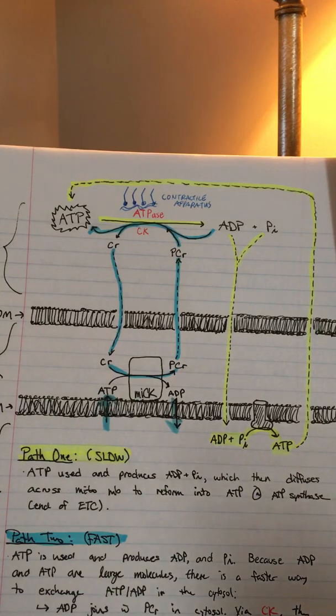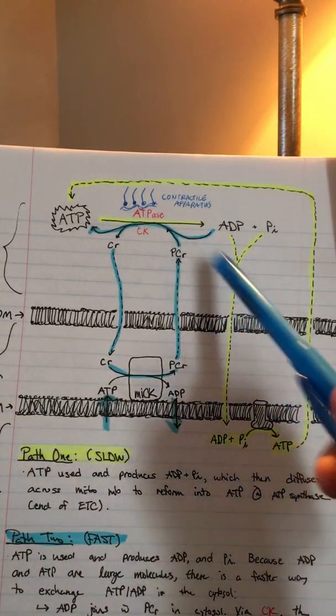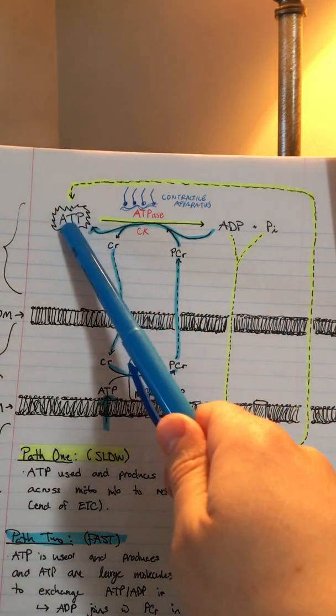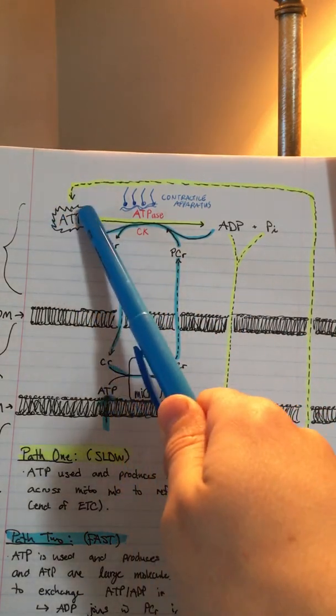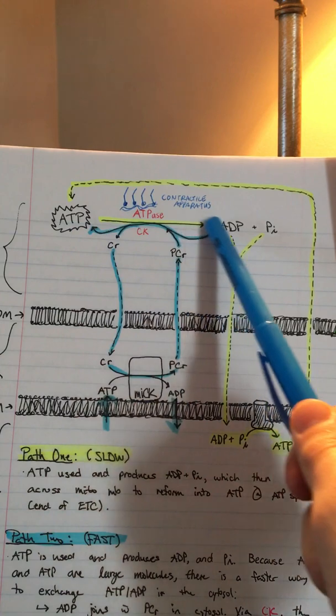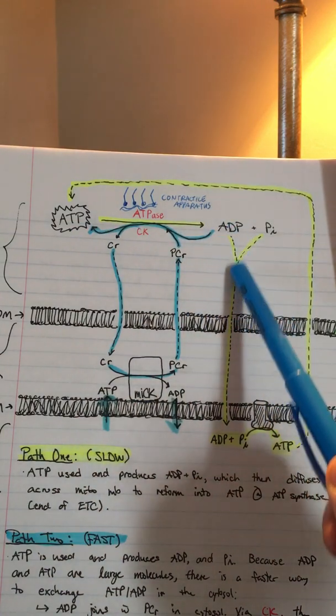However, there is a second pathway that happens at the same time and it's much quicker, and it uses phosphocreatine. You start in the same position: ATP next to the contractile apparatus gets hydrolyzed to ADP.